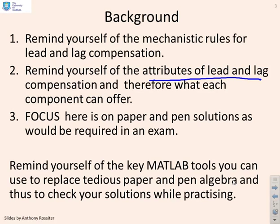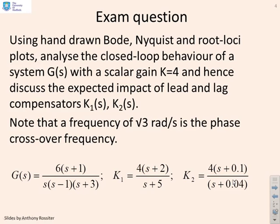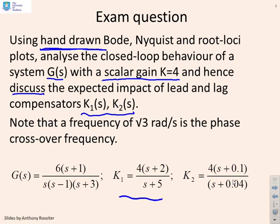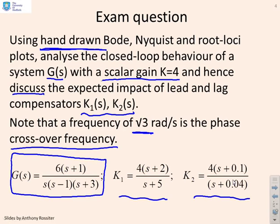Here's the question. Using hand-drawn — that's key, because that's what you've got to do in an exam — Bode, Nyquist and root loci plots, analyze the closed-loop behavior of a system G, and you're given a scalar gain K equals 4 as one possible compensator. Hence discuss the expected impact of two compensators K1 and K2, where each is given. You're also given that root 3 is the phase crossover frequency for the original system, which is G(s) = (6s+1) / [s(s−1)(s+3)].